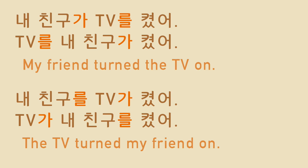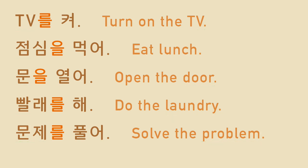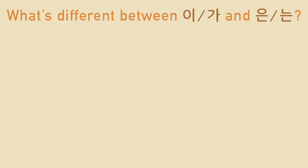I have no idea what's on TV though. If you see either 을 or 를 attached to a noun, you can tell that the noun is an object. Now you may have a question: what's different between 이/가 and 은/는?